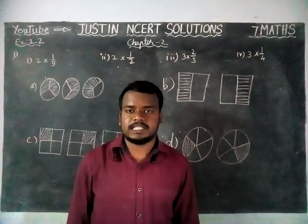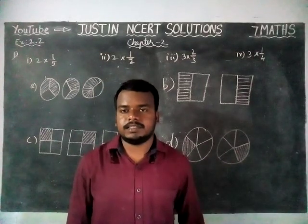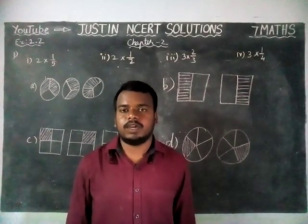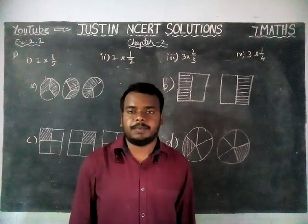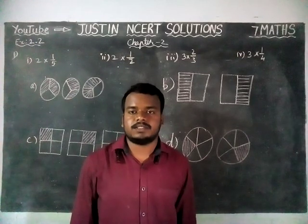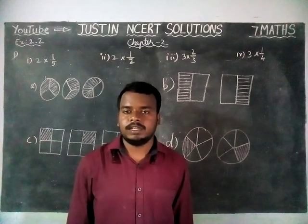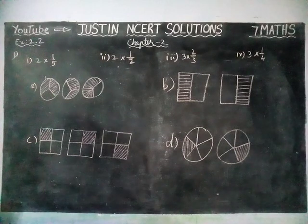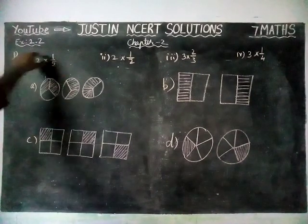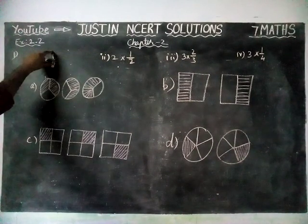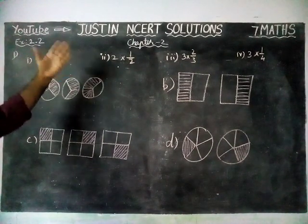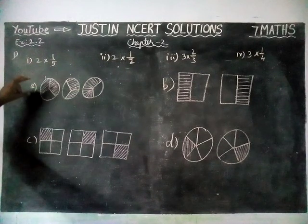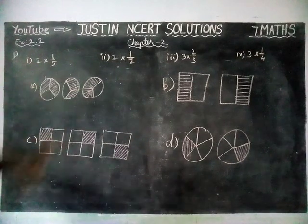Hi students, welcome to Justine NCRT Solutions. In this video, we are going to see 7th Maths Chapter 2 Exercise 2.2 First Question. Here they have given some numbers, some multiplication with whole part and fraction. Now we have to match it with the correct diagram.